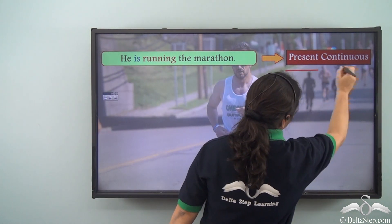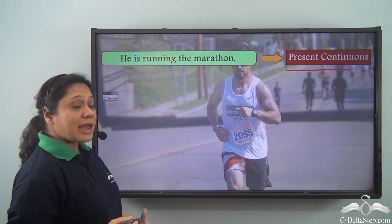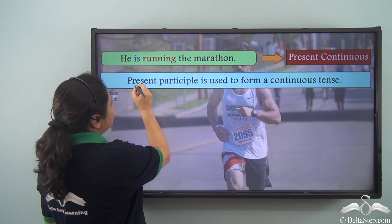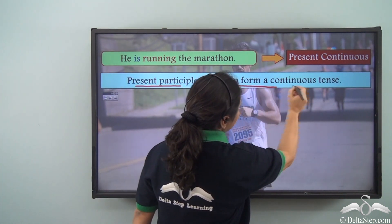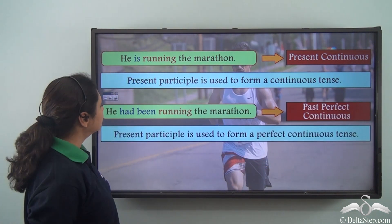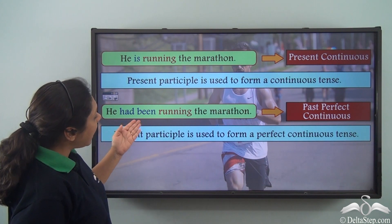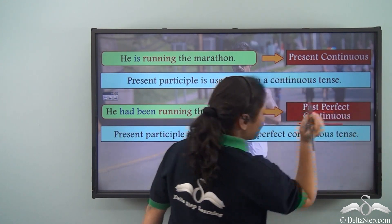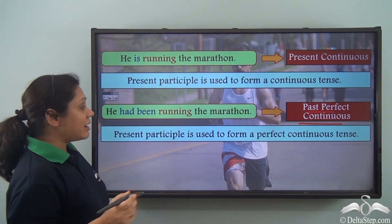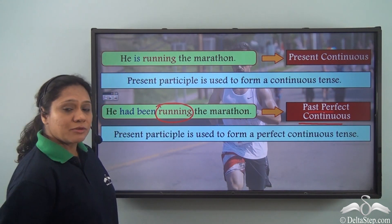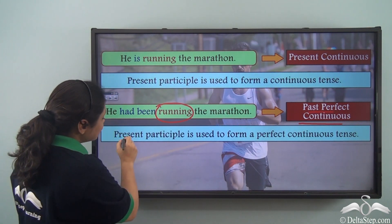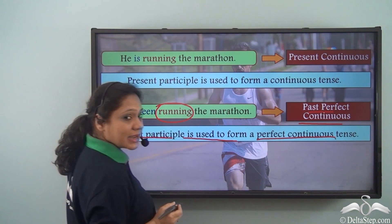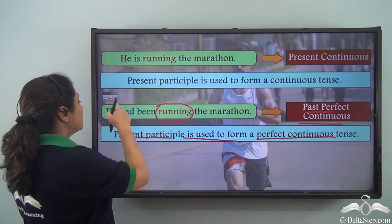Let us read the sentence: 'He is running the marathon now.' This sentence portrays the present continuous tense where we have used the present participle 'running.' In the second sentence, 'He had been running the marathon,' this portrays the past perfect continuous tense where we have again used the present participle 'running.' So we can say that the present participle is used to form a continuous tense and a perfect continuous tense.